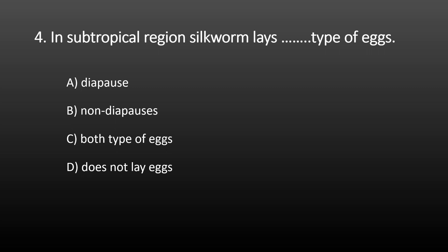Next MCQ: in subtropical regions, silk moth lays which type of eggs? The options are diapause and non-diapause. Diapause eggs undergo a dormant period. In subtropical regions like India, silk moth lays non-diapause eggs. The correct option is non-diapause eggs.